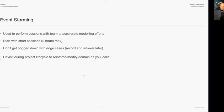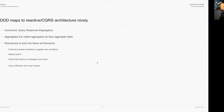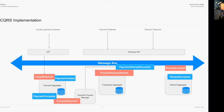As you might have noticed, Domain Driven Design maps well onto CQRS - Command Query Responsibility Segregation architecture. Aggregates are called aggregates because they aggregate state. Robustness is built in - they're ordered and eventually consistent, negating race conditions. Horizontal scaling is achieved via message consumers and publishers. You can get query efficiency by using read models - rather than reading state from your aggregates, read models let you build APIs to retrieve data efficiently.